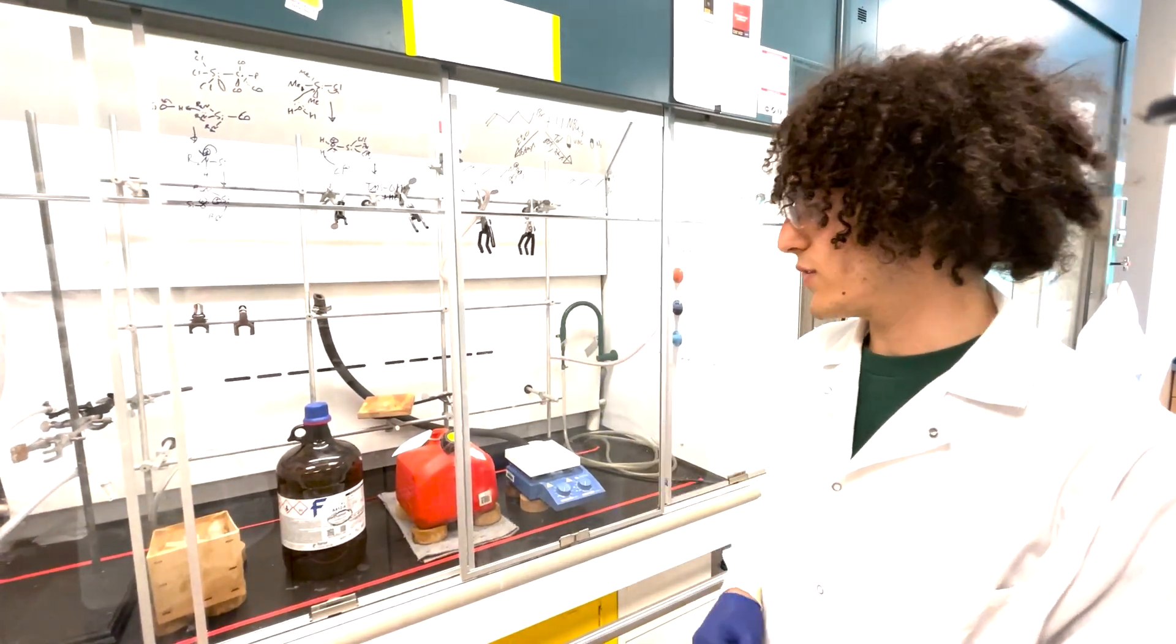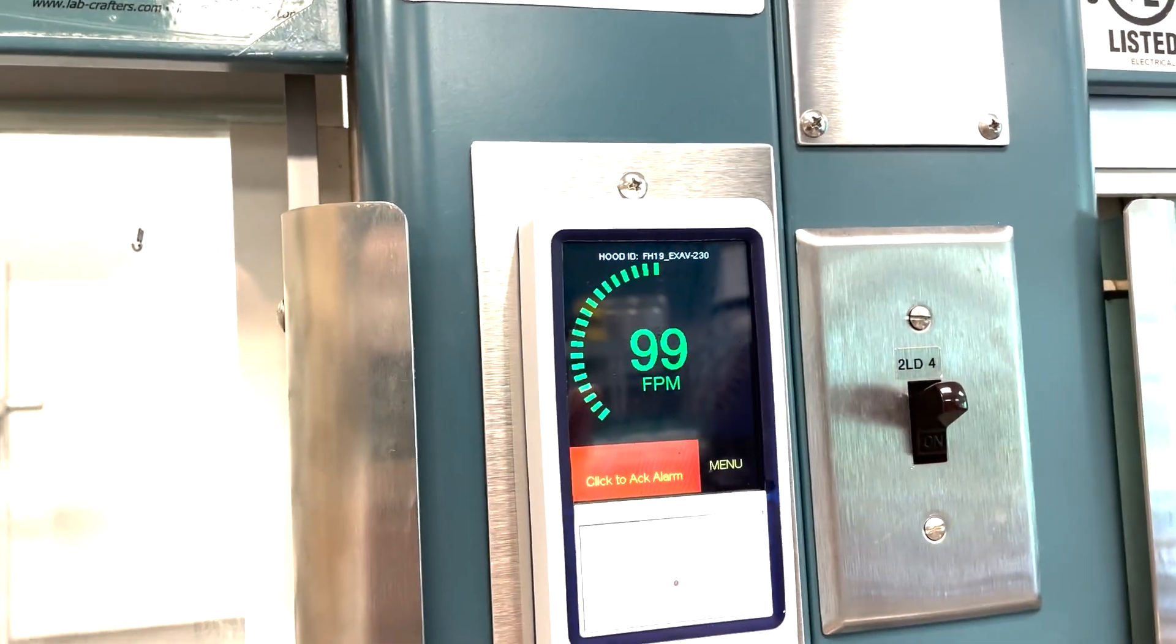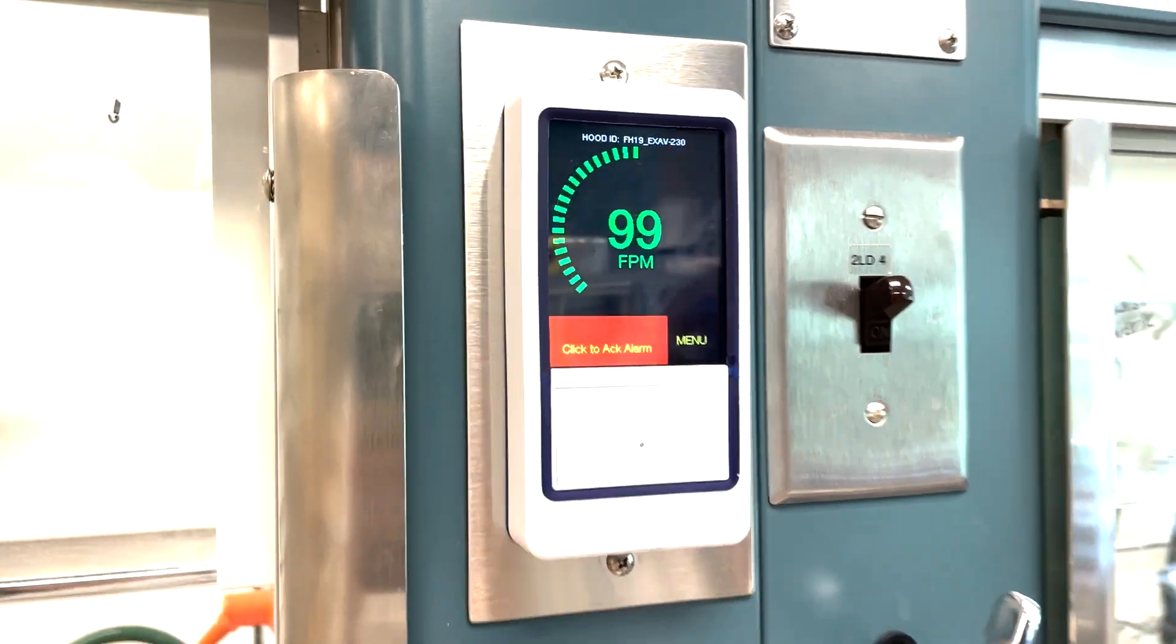In more modern fume hoods such as here in Vogue Wright, we get digital readouts which have the face velocity shown in fpm or feet per minute.